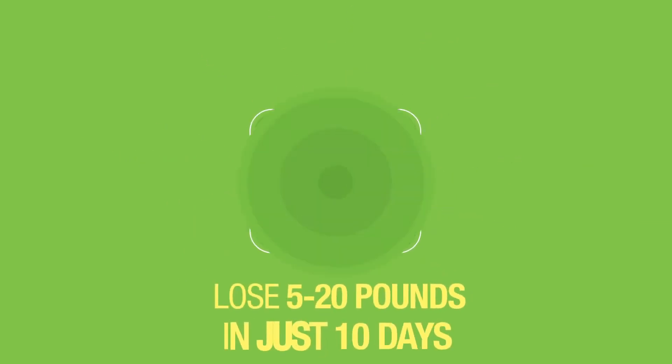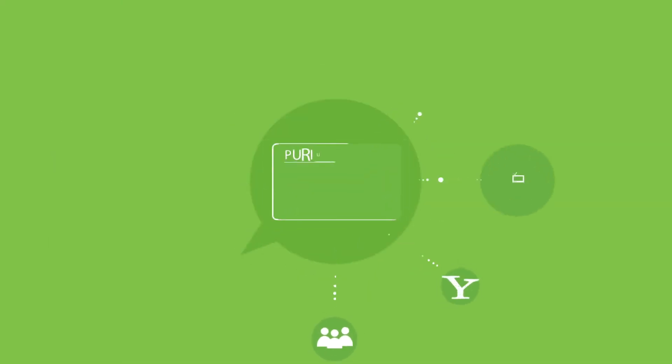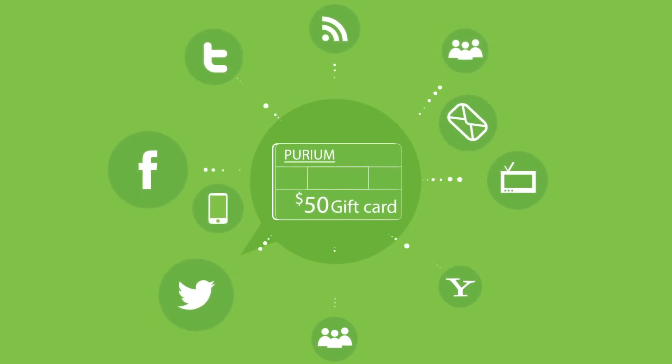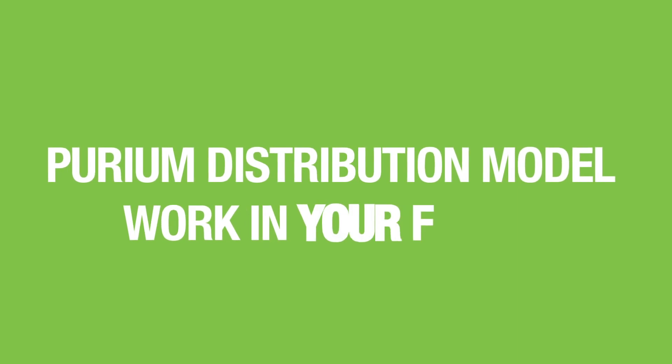Lose up to 20 pounds in the next 10 days, then just share your results with a $50 gift card attached and watch the Purium distribution model work in your favor.